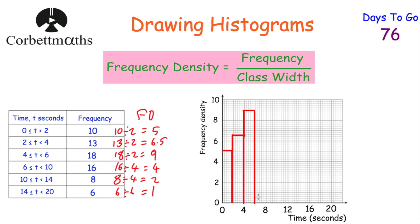The next bar goes from 6 to 10 with a frequency density of 4, so we draw it across that wider interval. Then from 10 to 14 with a frequency density of 2. And finally from 14 to 20 with a frequency density of 1. So we've drawn our complete histogram.